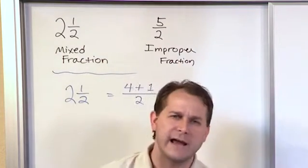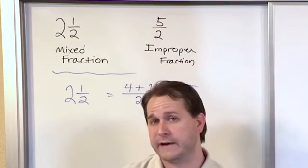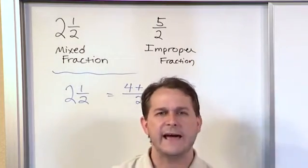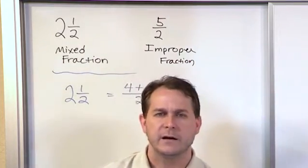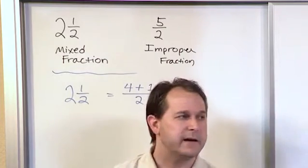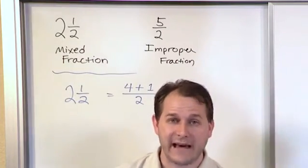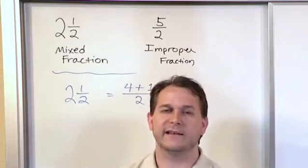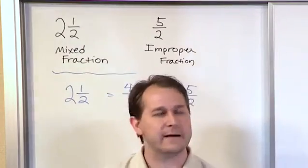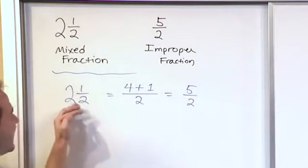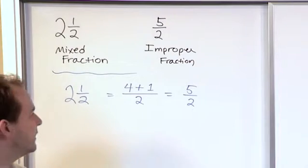If I tell somebody, hey, give me two and a half cakes, and then they give me that. And then on another day I say, hey, give me five halves of a cake or five halves cakes, then they would go get the exact same amount of cakes. They would give me two whole cakes and cut another one in half and give me that. Because five halves is exactly the same as two and a half.